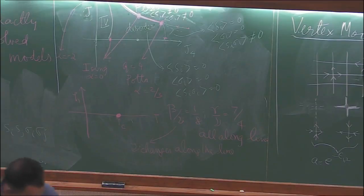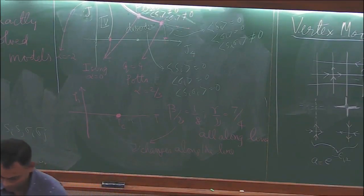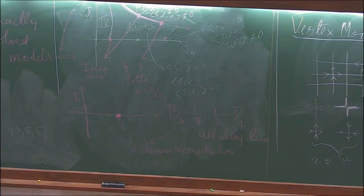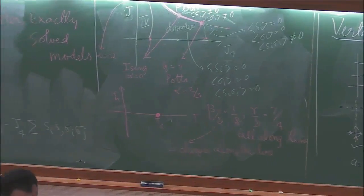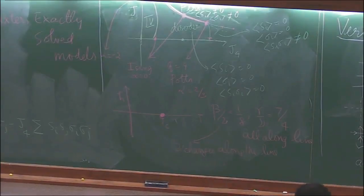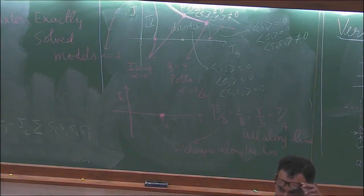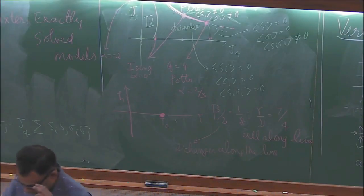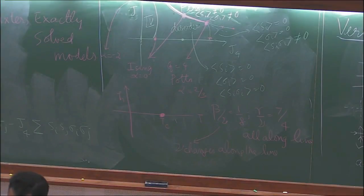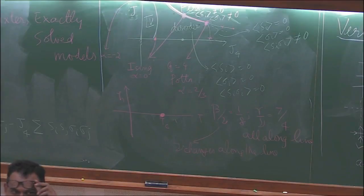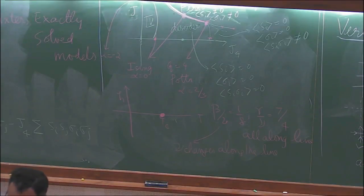There were some learning outcomes fixed at the beginning of the course. Students should be able to solve a generic model on the Bethe lattice — yes, that was done clearly. And students should be able to set up transfer matrices in 1D for short-range systems — about 50% yes.